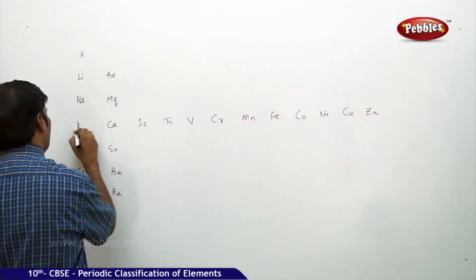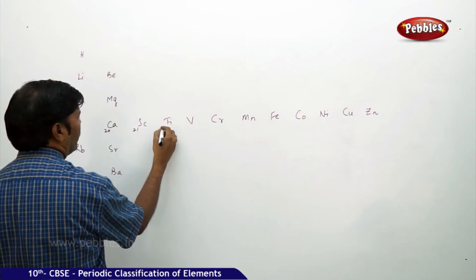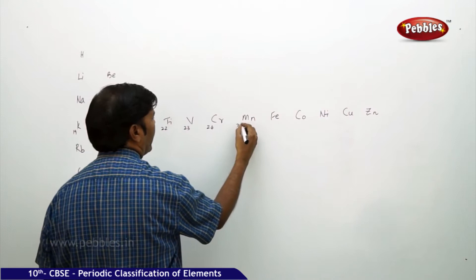Potassium is 19 atomic number, Calcium 20, 21 Scandium, 22 Titanium, 23 Vanadium, 24 Chromium, 25 Manganese.